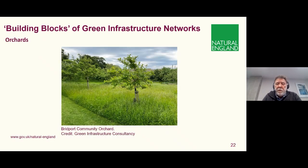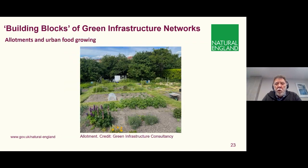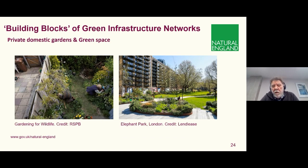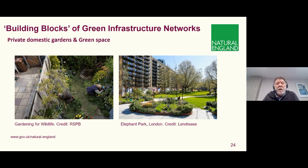Orchards are very popular now — there's guidance on how to set about that and plenty of people have already successfully created community orchards, particularly in urban areas. More conventional things like allotments and food growing are also covered. Working through the building blocks, we have parks and gardens — conventional, traditional, but we need to perhaps work a little bit harder in the future to make these multifunctional. People can do what they wish within reason in their private gardens, but we like to encourage people to make the most of private gardens to add to the overall green infrastructure network.